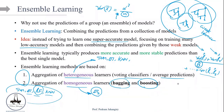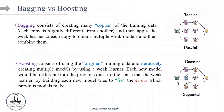Now that we know the definition of ensemble methods, let's move to a more formal definition of bagging versus boosting. Bagging consists of creating many copies of the training data, where each copy is slightly different from the others. We generate multiple copies of the main training set — copy one, copy two, copy three — then apply the weak learner to each copy to obtain multiple weak models and combine them. If it is classification: majority votes. If it is regression: simply take the average. That's the definition of bagging.